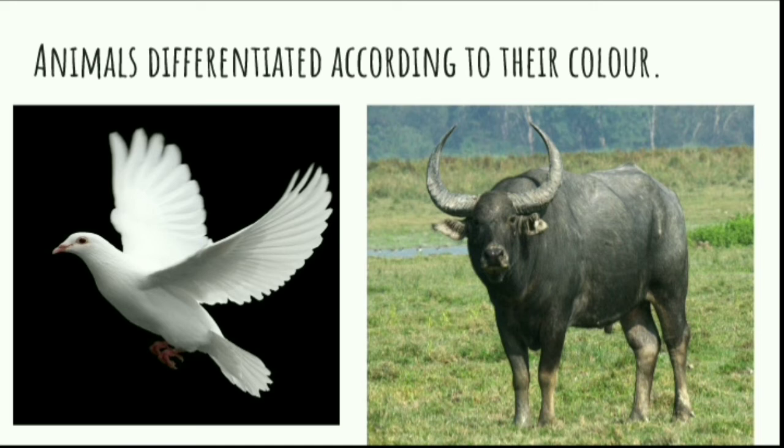Some animals are differentiated according to their color — a white dove, a black buffalo. We sometimes describe them this way.